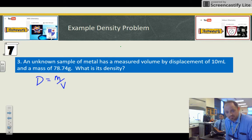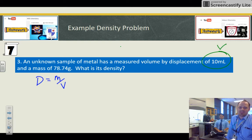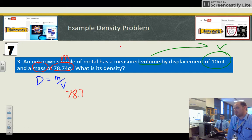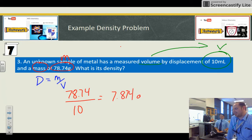Unknown sample of metal has measured volume by displacement 10 milliliters and a mass of 78.74 grams. So we know our volume's 10 mils and the mass is 78.74. So we plug it and chug it. 78.74 divided by 10 equals 7.874 grams per milliliter this time, which is the same as a centimeter cubed. They are the same.